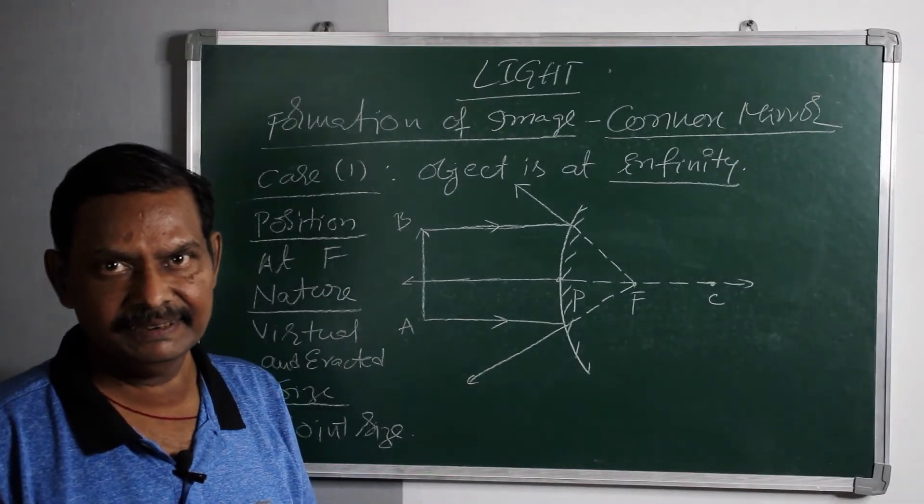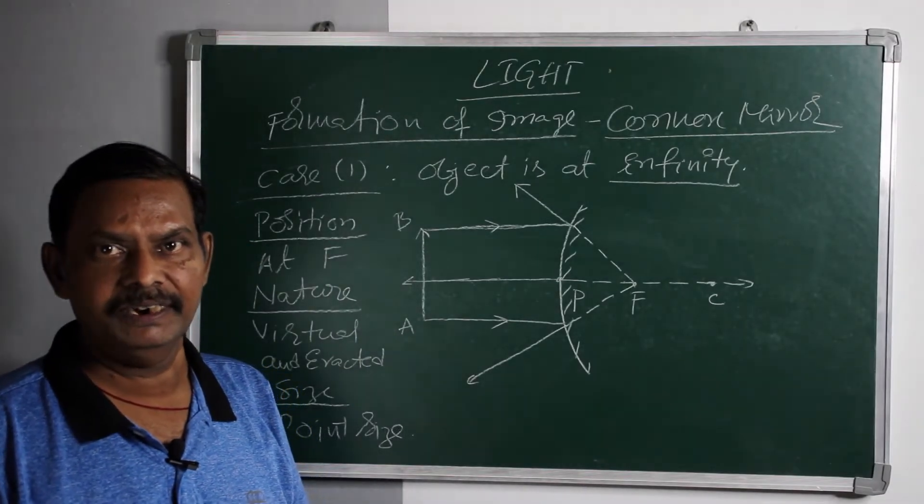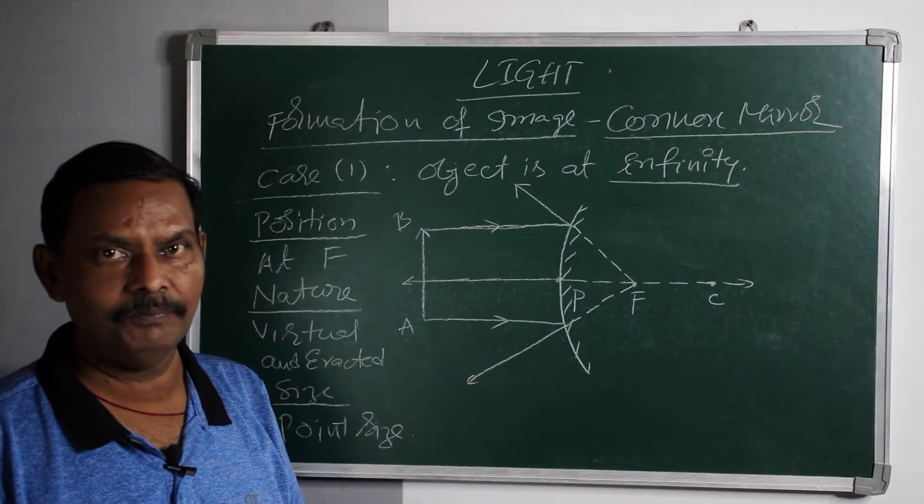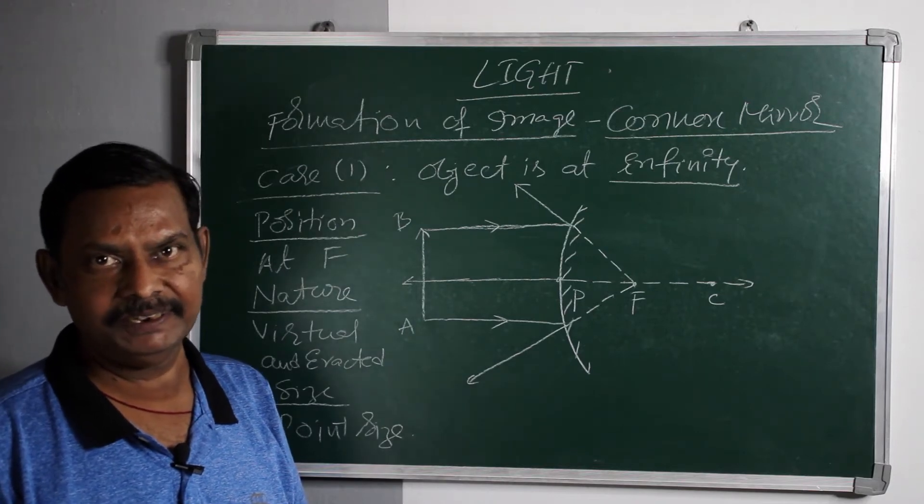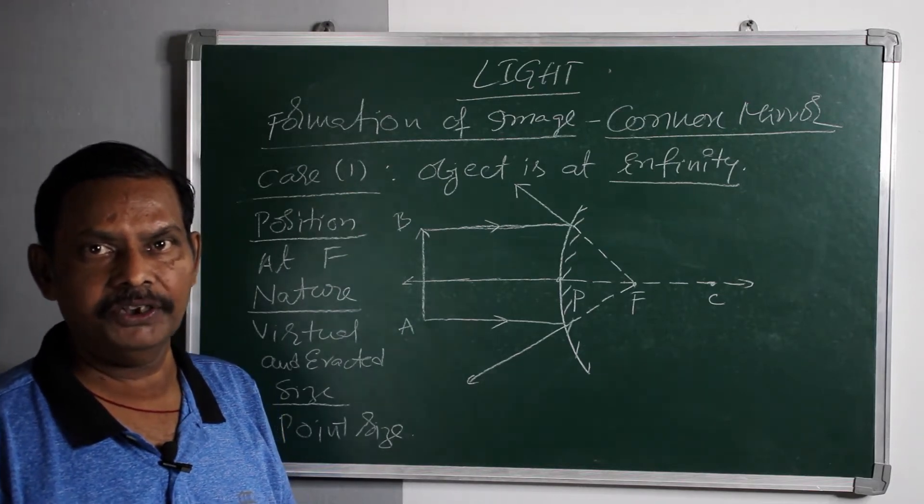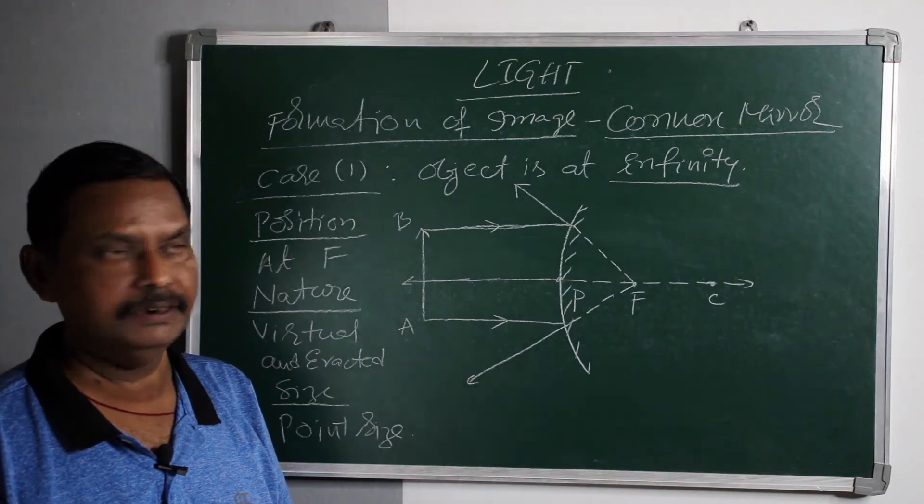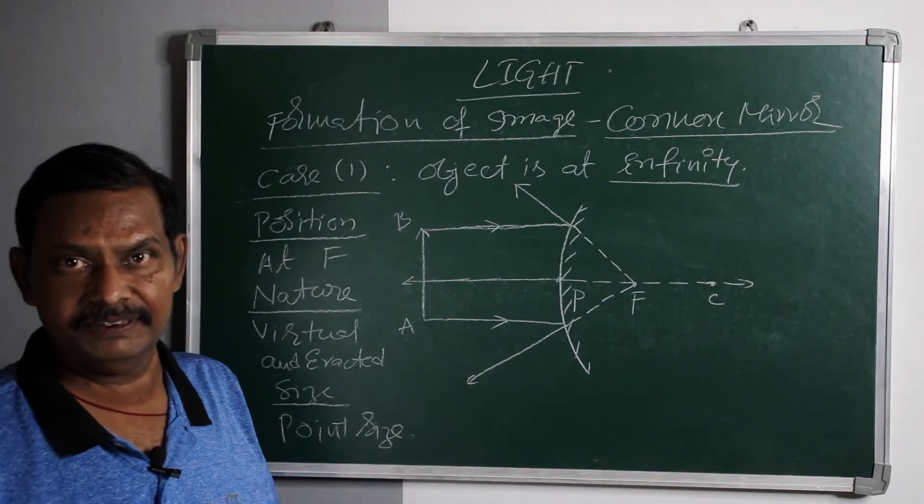Now, let us discuss about the position, nature and size of the image formed when an object is placed in front of a convex mirror. So there are two cases for this.